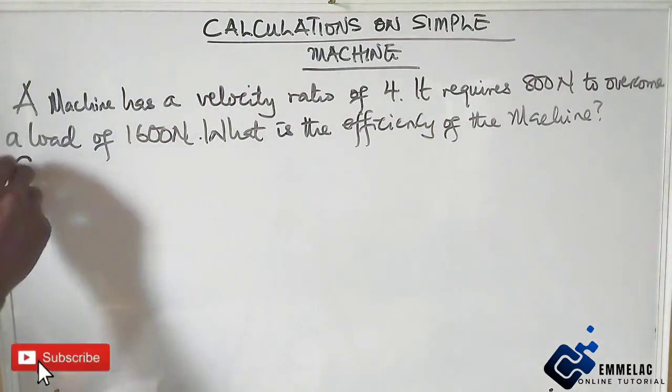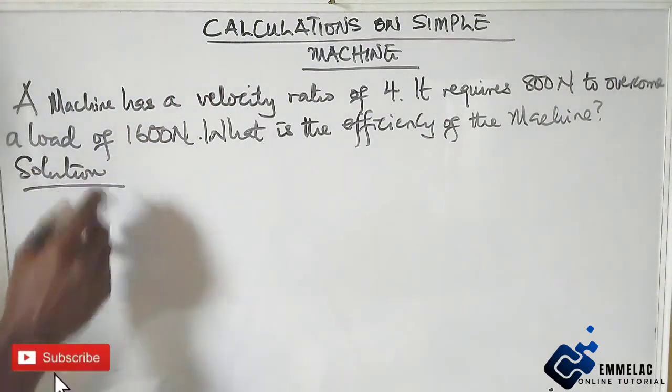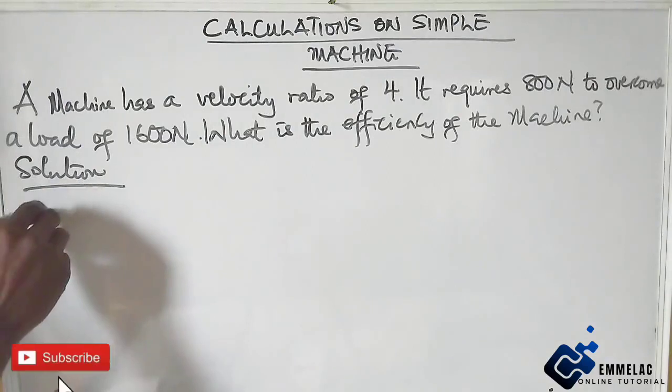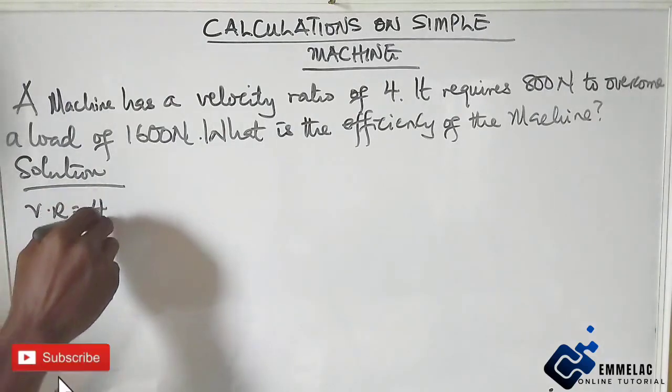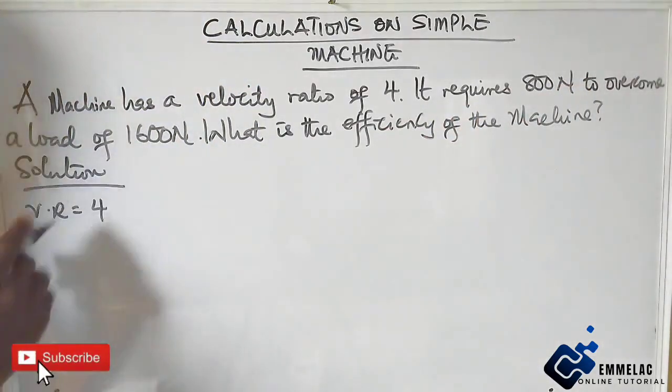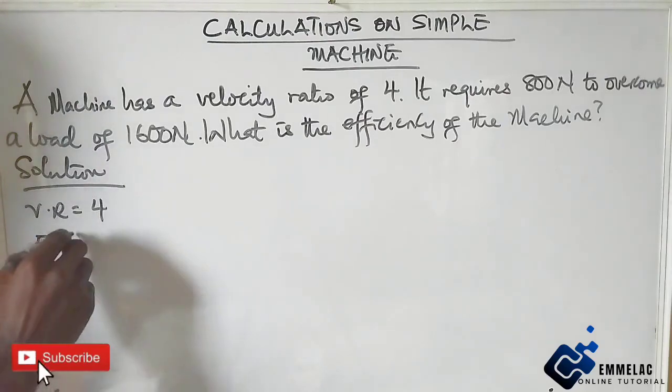Now in tackling this, what we need to do is write out the parameters. First, we are given that velocity ratio is 4. Now it requires 800 Newton to overcome a load, so our effort E is 800 Newton.